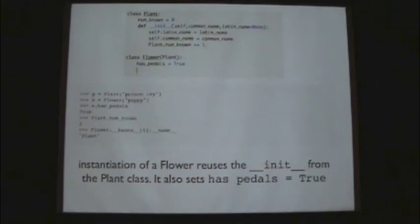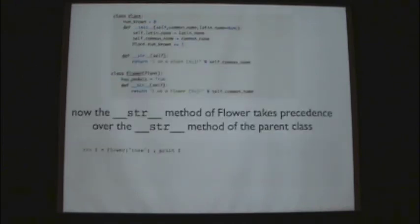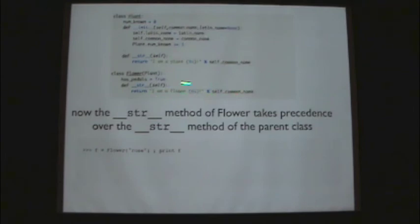A student asks: if `Flower` also had an `__init__`, would it run both inits or just Flower's? Only the Flower `__init__` runs, but inside the Flower `__init__` you could explicitly call the Plant `__init__` as well. When we say `__add__` inside our Bear class, we're overwriting the `__add__` method of the base class `object`. If we don't give `Bear` a `(object)` base class, Python implicitly makes it a subclass of `object` anyway. I can also create a `__str__` inside both Plant and Flower — when I call `print e` on a flower instance it uses the Flower `__str__`, overriding the Plant one. The subclass methods take precedence over the base class.